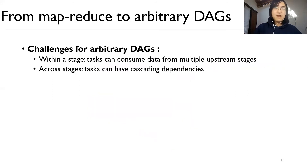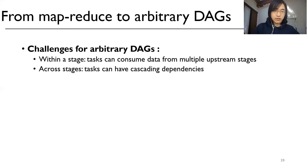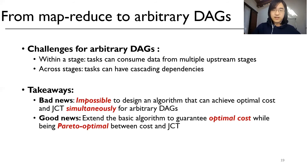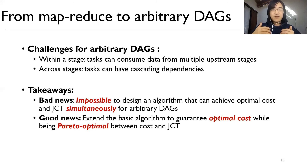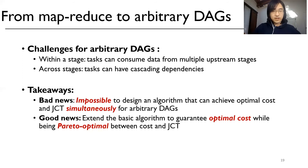We extend the analysis from MapReduce to arbitrary DAGs. The bad news is that it is impossible to design an algorithm that achieves optimal cost and JCT simultaneously for arbitrary DAGs. The good news is that we can extend the basic MapReduce algorithm to guarantee optimal cost while being Pareto optimal between cost and JCT. Please refer to our paper for more details.